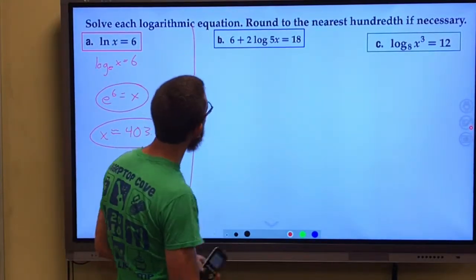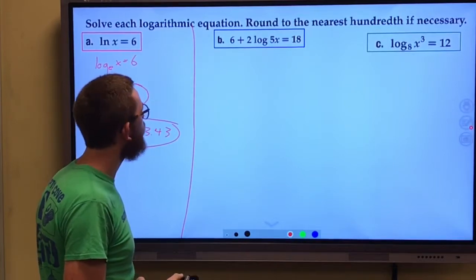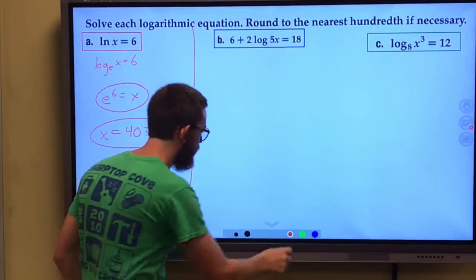Moving on to B. Well, we've got 6 + 2 log 5x = 18. All right, so let's see here.